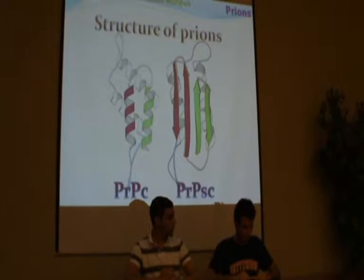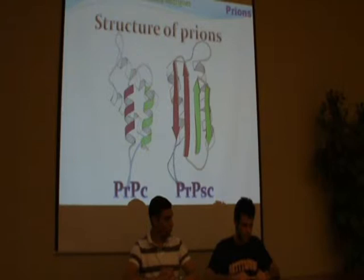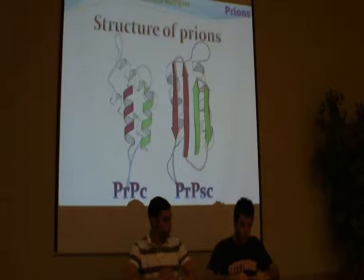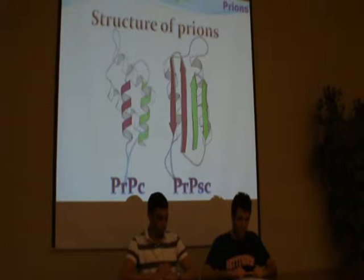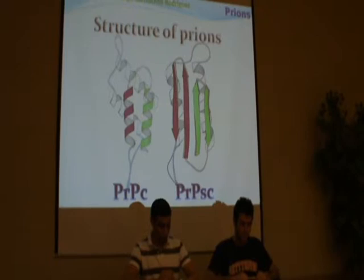From an atomic basis, both PRPSC and PRPC are the same. However, biological studies have shown their structural differences. Since infectious prions are composed largely, if not entirely, of PRPSC, this alpha-helix-to-beta-sheet structural transition appears to be the fundamental event in the propagation of prions as well as the pathogenesis of neurodegeneration.